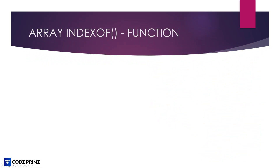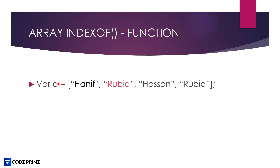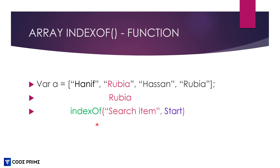First we are going to learn the array indexOf function and how it works. I take an array element stored in a variable, which is an array of string name values. We are going to find the name 'Robaya'. You can see this array element 'Robaya' appears two times. The indexOf function takes a search item — you write the name you want to find — and it returns the index. The array indexes are: zero, one, two, three.